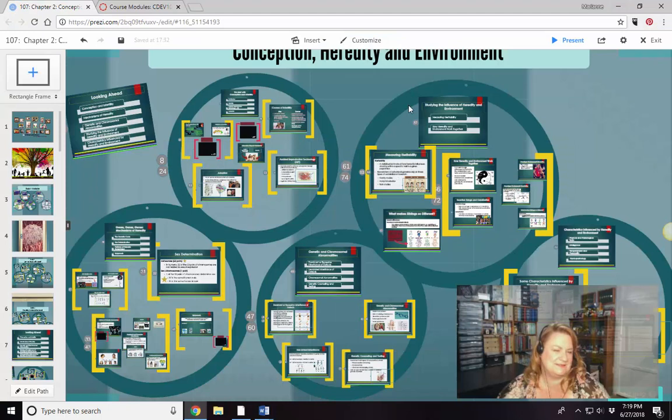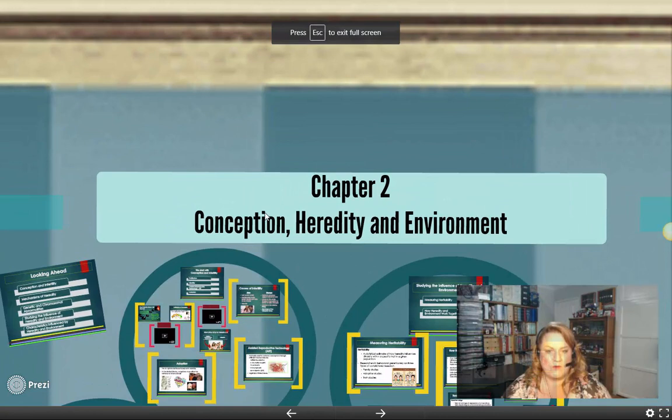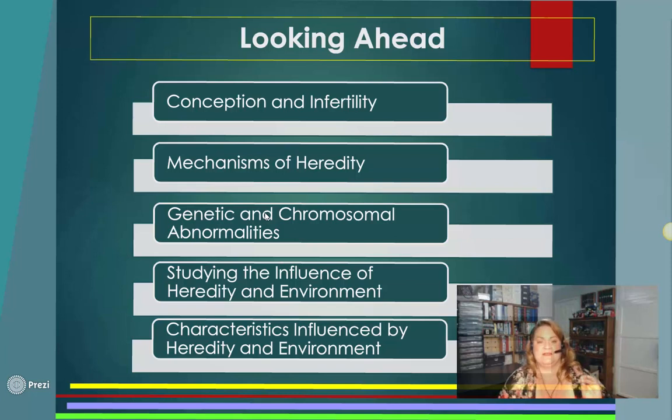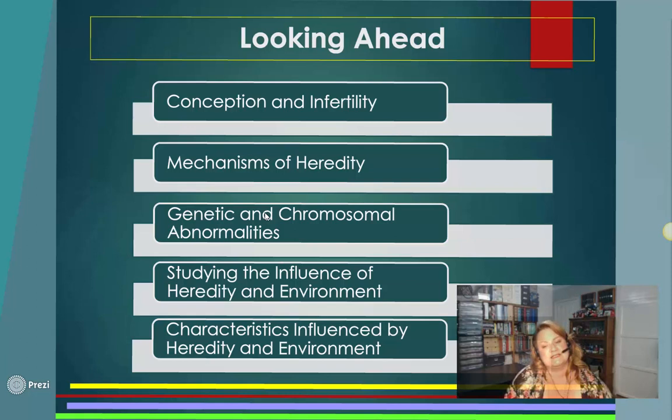In looking at Conception, Heredity, and Environment, we're going to be talking about five areas: Conception and Infertility, Mechanisms of Heredity, what we inherit from our genes, Genetic and Chromosomal Abnormalities or Mutations, and the influence of the environment. Our genes and the environment play together — it's not just nature or nurture, it's technically nature and nurture.